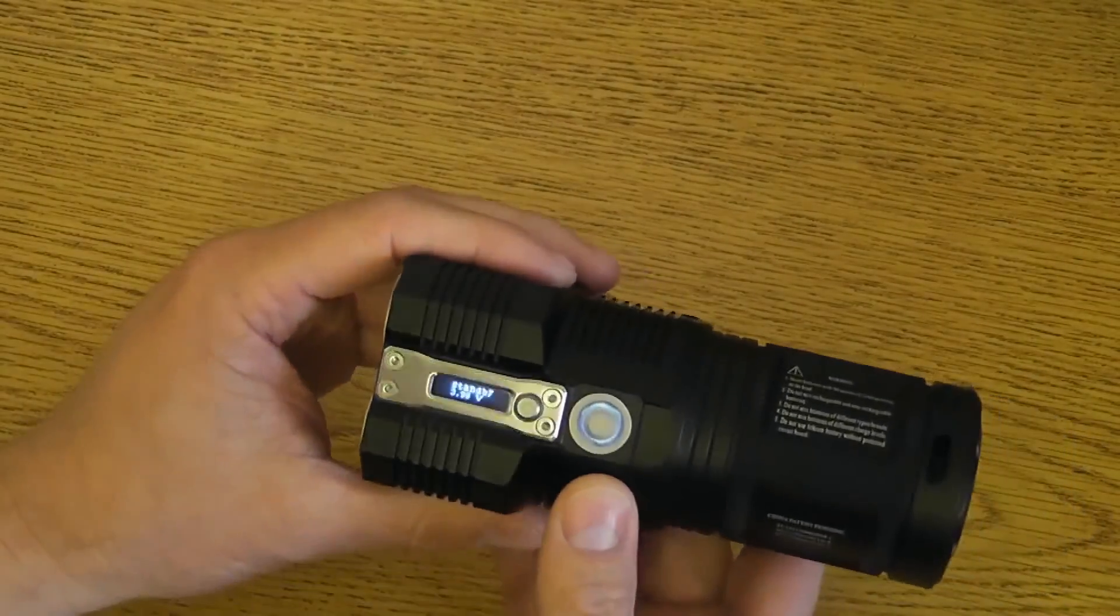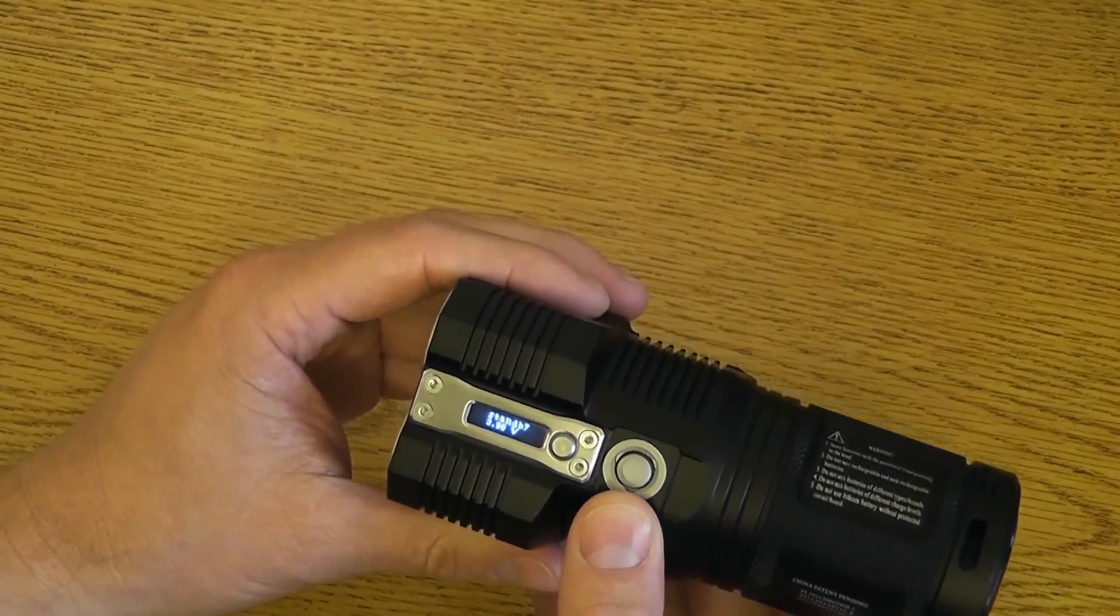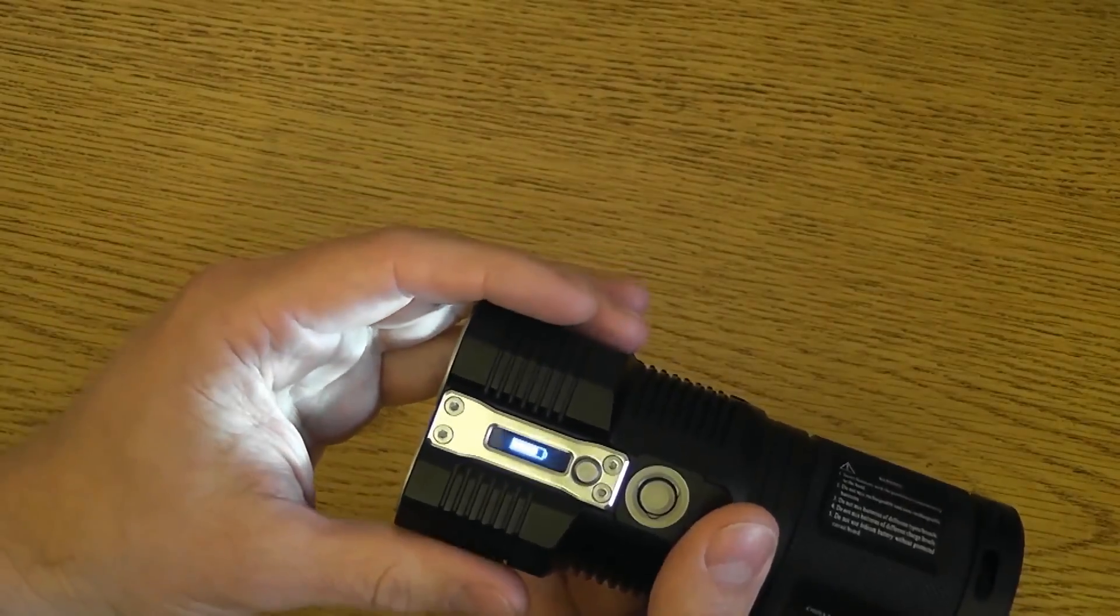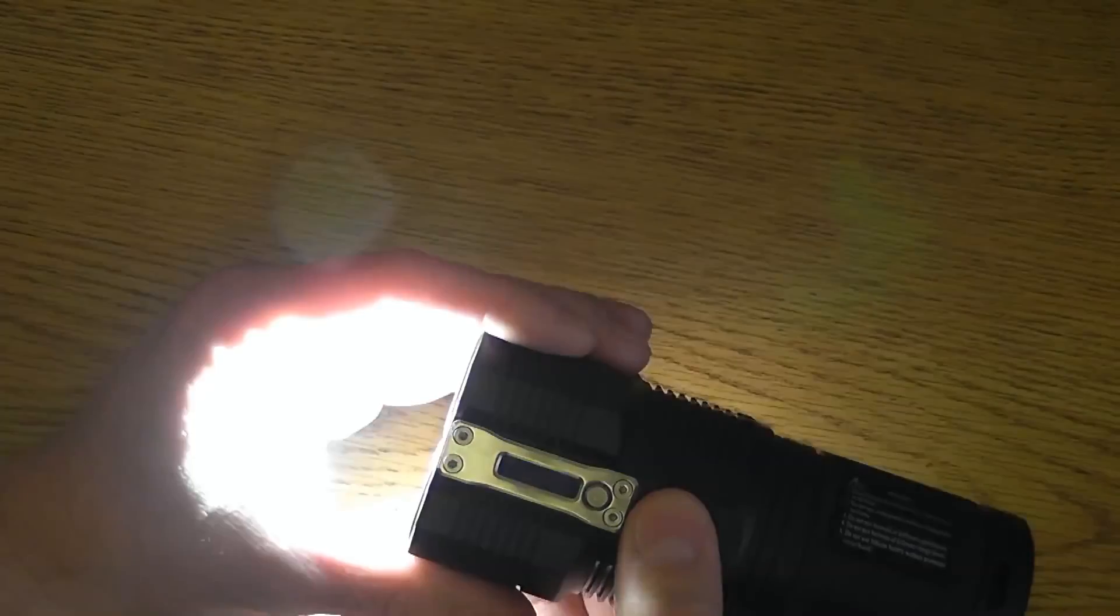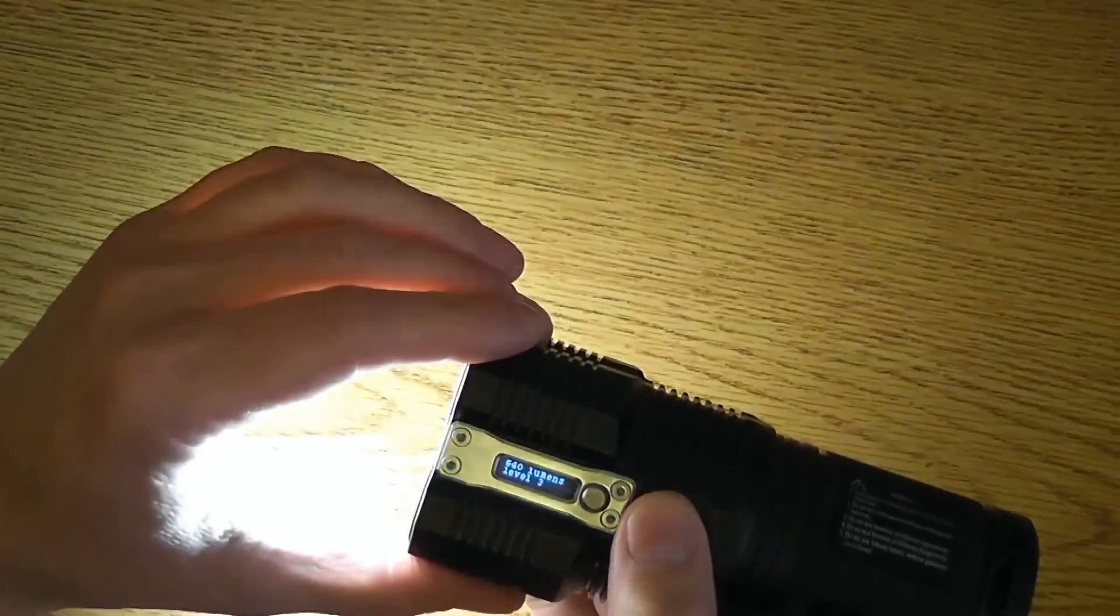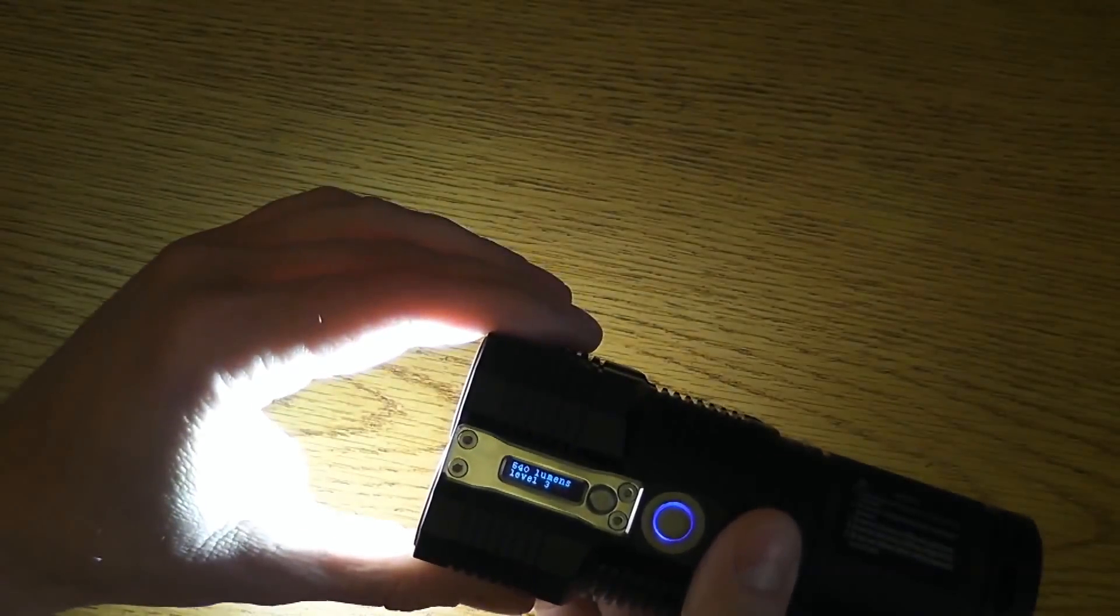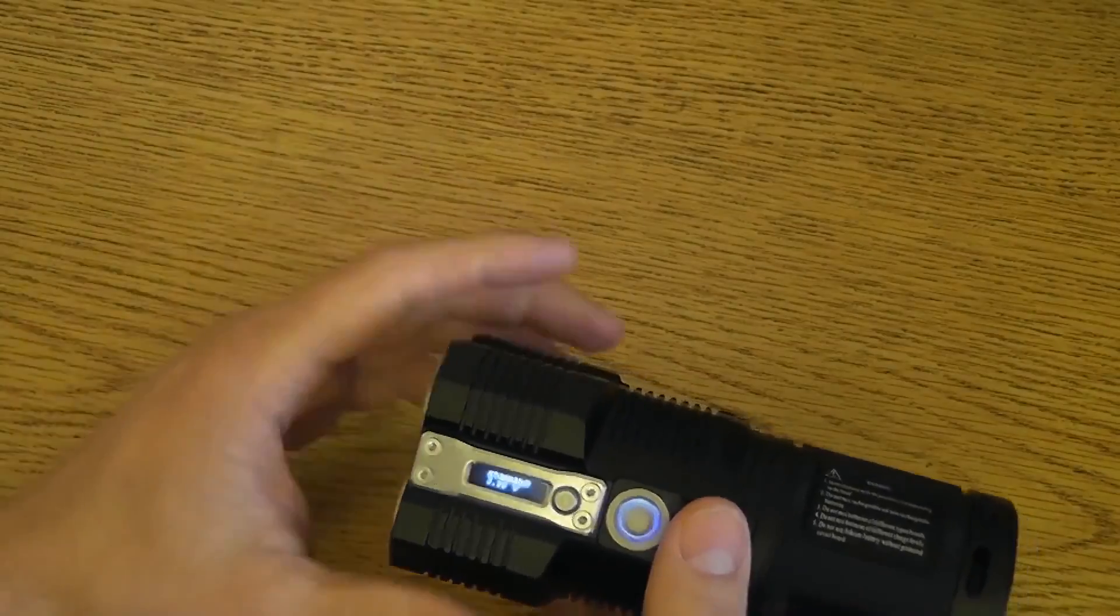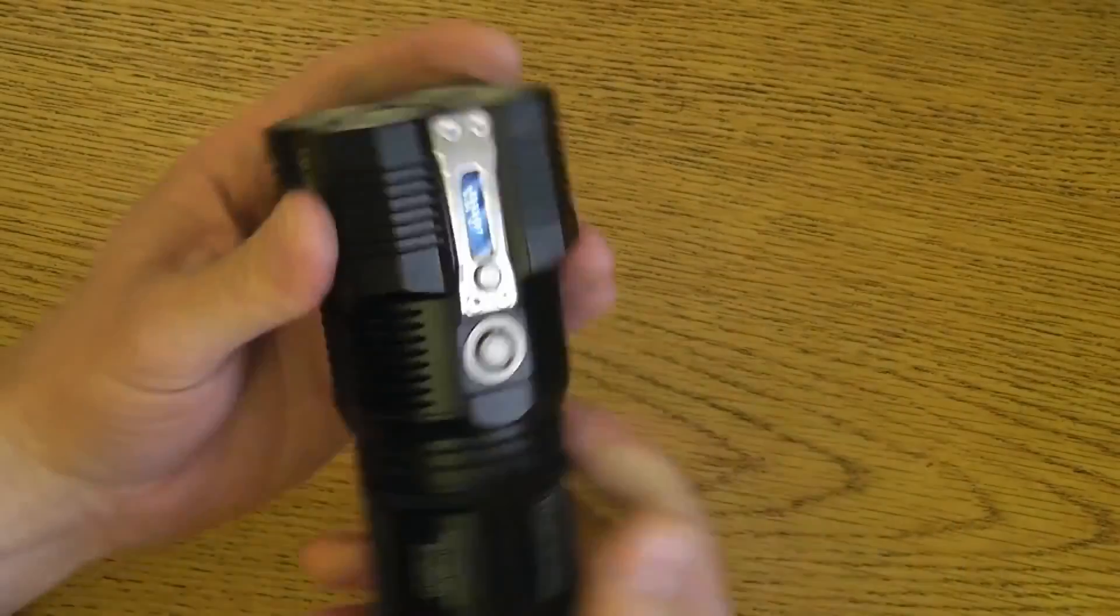So, let's just go through those modes really quick once more, and then we'll talk about the lockout. To get to a daily mode, half press. It'll remember whatever mode you were at before. In this case, level one, which is three lumens. Another half press gives you level two. Another half press, level three. Another half press, level four. At any one of these four modes, you can do a half press and hold to get to turbo. Half press and hold again, get you back to daily mode. Half press again, back to turbo.